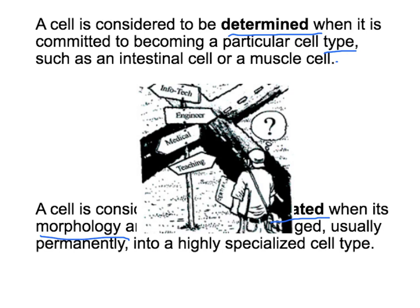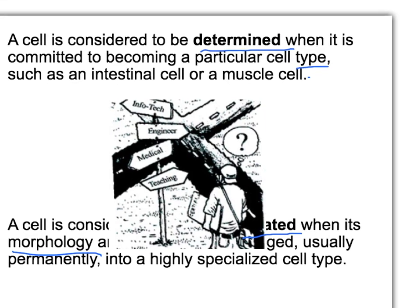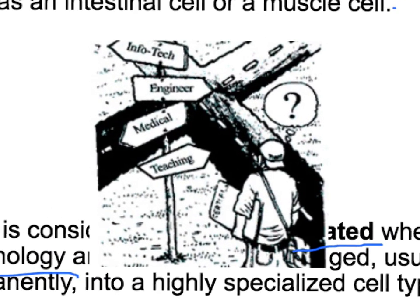An analogy to this change would be that of an undergraduate student who just entered college and declared a major — that would be determination. It's a student determined to become an engineer or a pre-med, but not yet an engineer or pre-med, so therefore not differentiated yet. But once you get your degree, you will be differentiated and you will be an engineer at that moment.